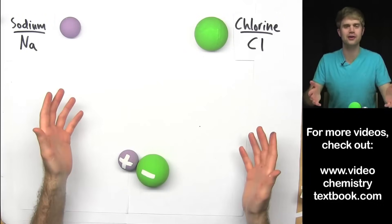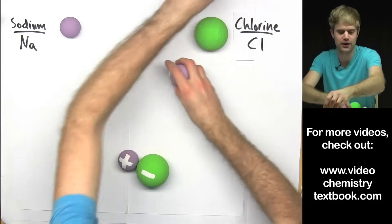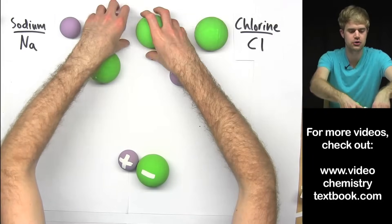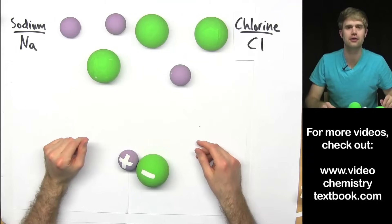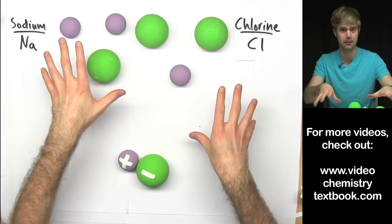In nature, rarely would we find just two atoms. Usually, there are going to be a lot more than two atoms that want to exchange electrons and combine together. So what happens when we have a bunch of atoms that could all do ionic bonding?